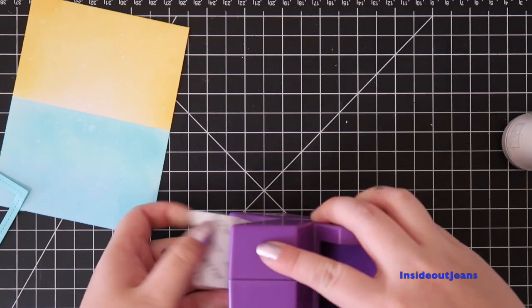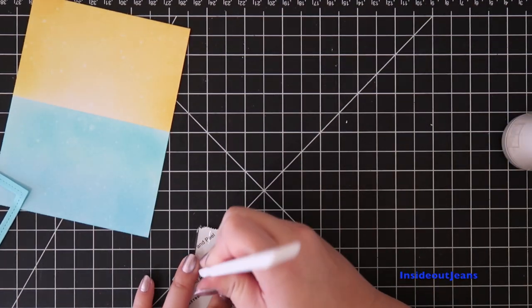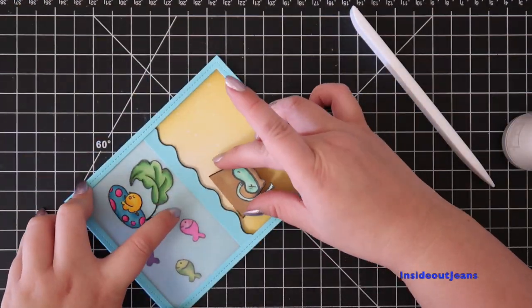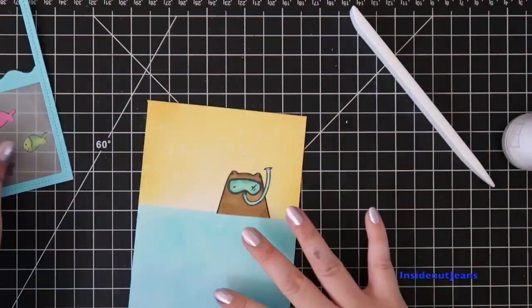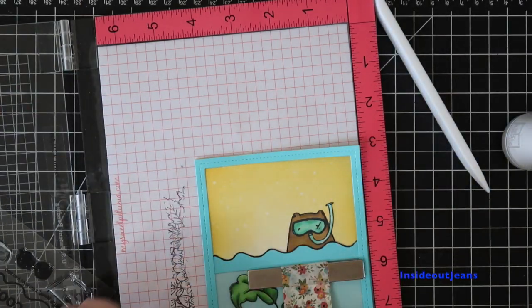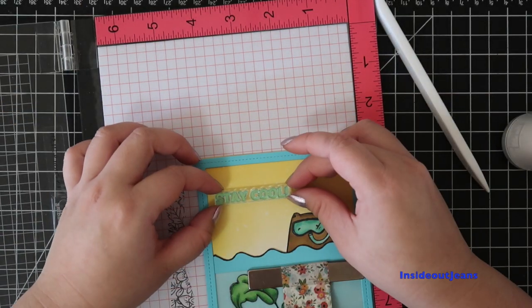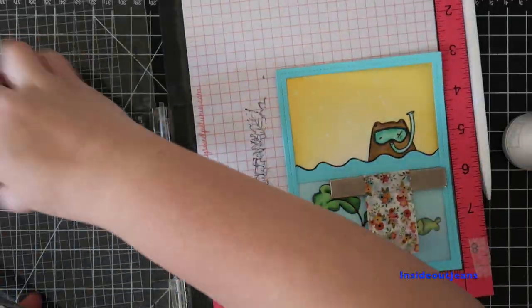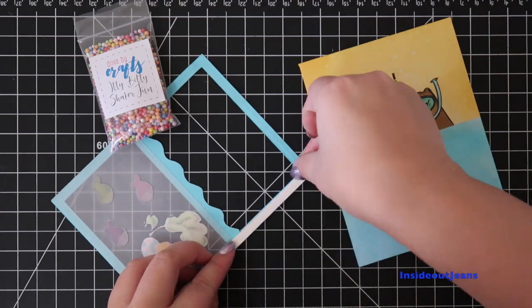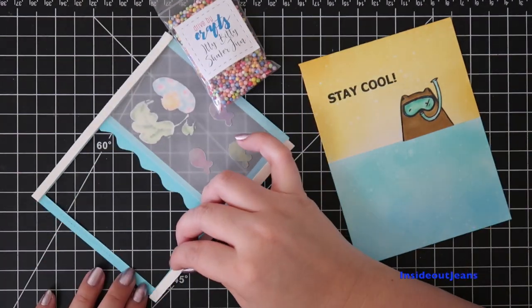Once that's done, I'll run it through the sticker maker and then add it directly to the card. I'll use the Stay Cool sentiment from the stamp set to stamp in the corner of the card. I use my Misti to do this.